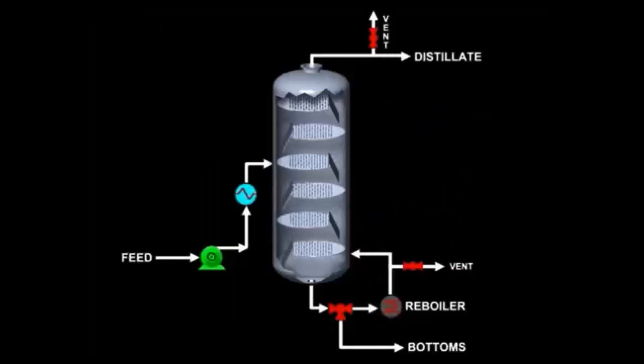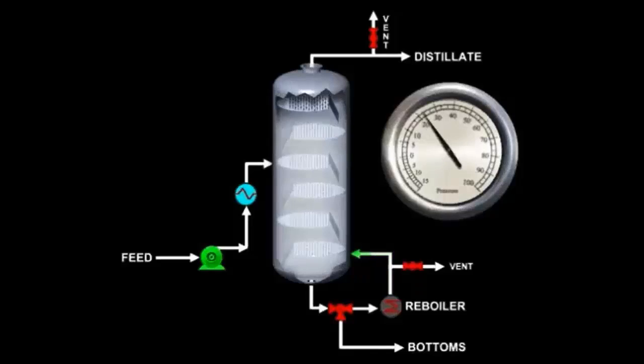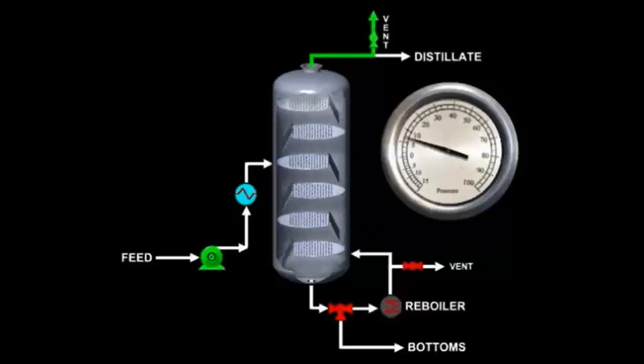Start pressurizing at the base of the column for columns operating above atmospheric. This will allow vapor to flow up the column in the design direction. For the same reason, start at the top of the column when depressurizing.